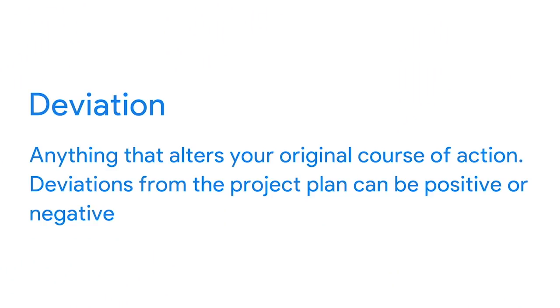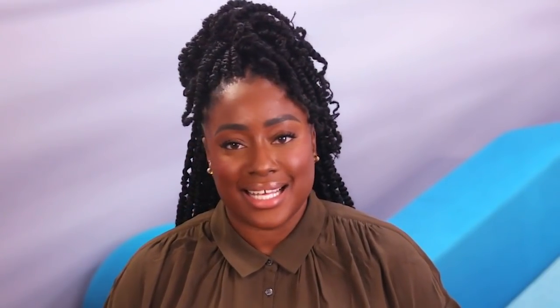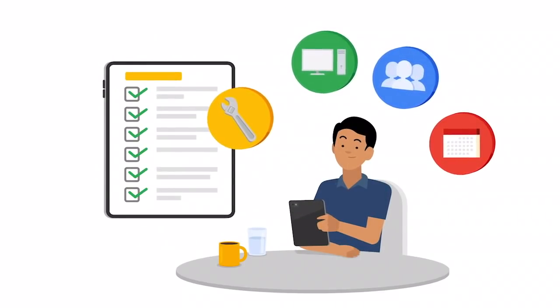Measuring project performance regularly to identify deviations from the project plan can help ensure that the project stays on track. A deviation is anything that alters your original course of action. Deviations from the project plan can be positive or negative. Are you ahead of schedule because a technical problem is less complex than you estimated? Thumbs up. Did a natural disaster shut down your testing team? Big thumbs down. Both of these are examples of deviations, and they're also examples of why tracking is such a crucial part of your role during the project execution phase. Tracking makes key project information transparent, and transparency is essential for accurate decision making.